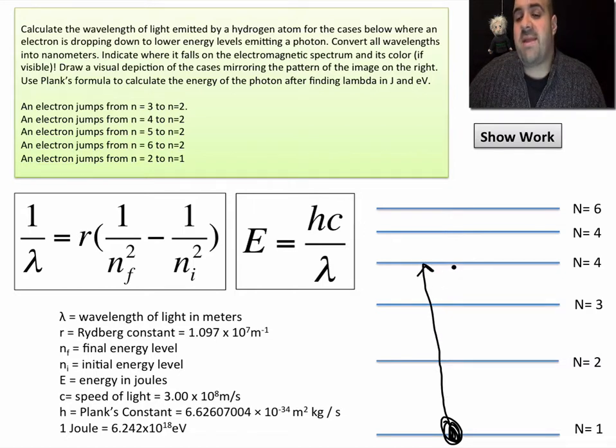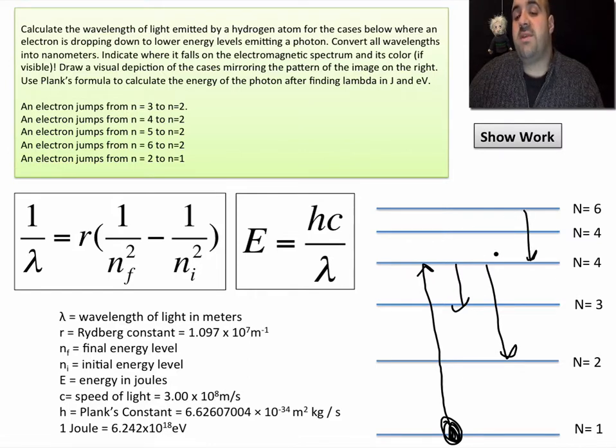It's going to drop back down. It may drop down from four to three, from four to two, or from four to one. Each different jump is going to correspond to a different energy of light.